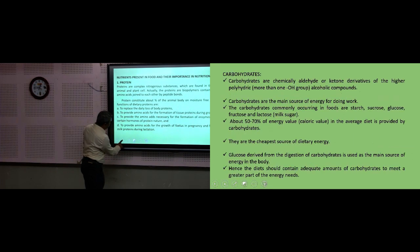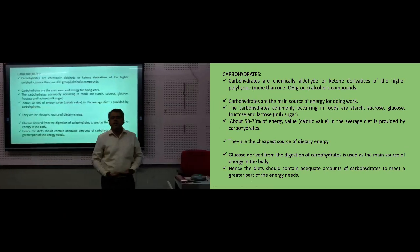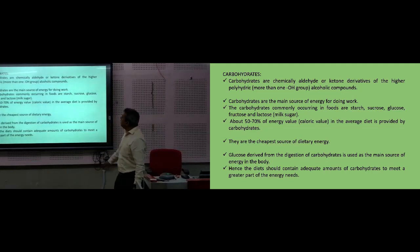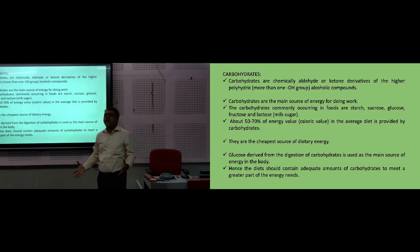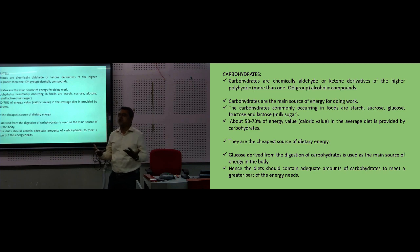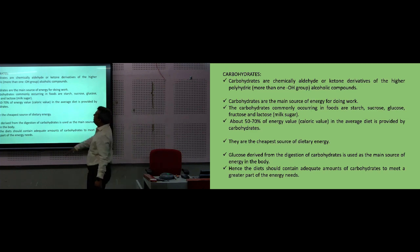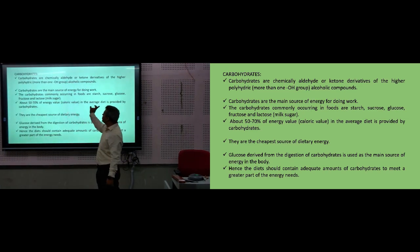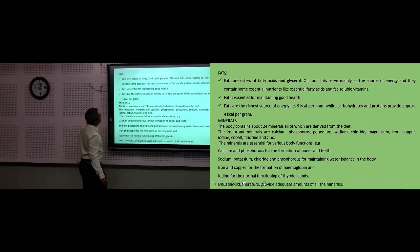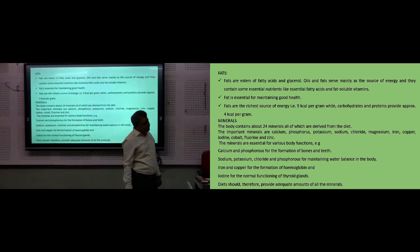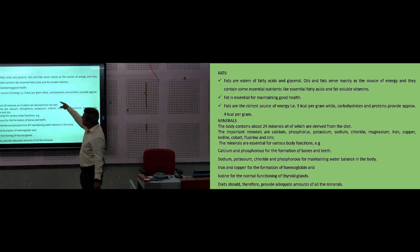Histidine and arginine are essential for the growth of the fetus and required in higher amounts during pregnancy or lactation. Carbohydrates are composed of monosaccharides, disaccharides, oligosaccharides, and polysaccharides — chemically made up of polyhydroxy aldehydes and ketones. Carbohydrates are the main source of energy — 50 to 70% of energy is given through carbohydrates. They are the cheapest source of energy. Fat contains essential fatty acids and fat-soluble vitamins essential for good health, and gives double the energy of carbohydrates. 24 minerals are essential: calcium and phosphorus for bone formation, iron for hemoglobin formation, sodium, potassium, and chloride for water balance, and iodine for normal functioning of the thyroid gland.